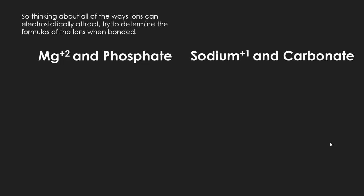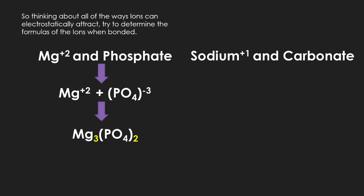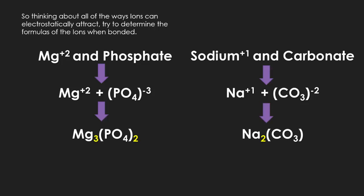Now let's try these examples. Thinking of the ways that ions can electrostatically attract, determine the formulas when they're bonded. Starting with magnesium (positive two charge) and phosphate — use Table E to determine the charge of phosphate, which is negative three. The LCM between two and three is six, so you need three magnesiums and two groups of phosphate, giving Mg₃(PO₄)₂. For sodium and carbonate: sodium is Na positive one, carbonate is CO₃ with negative two. You need two sodiums and one CO₃, giving Na₂CO₃.